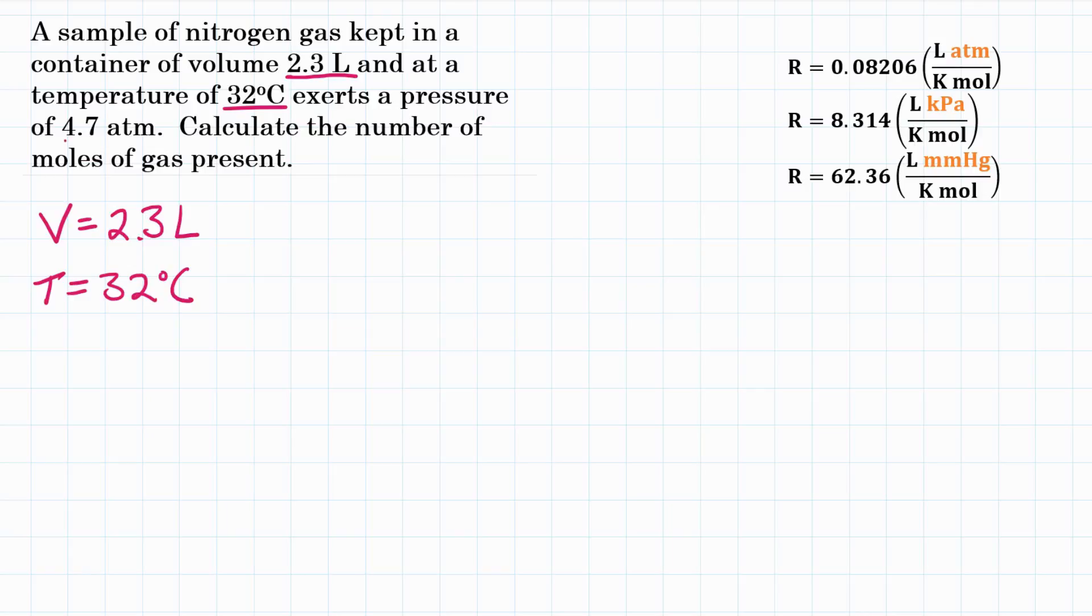And then also a pressure of 4.7 atmospheres. So P for pressure, 4.7 atmospheres, and they want moles. Moles is represented by little n. That's what we're trying to solve.